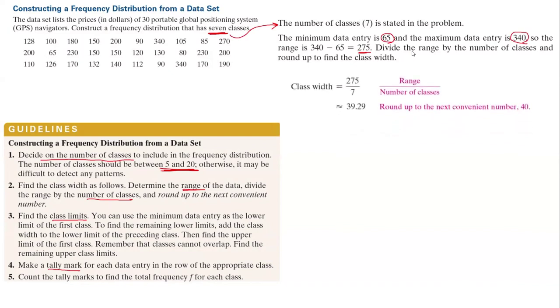Let us find the class width. It is the range divided by the number of classes, which is 39.29. Please pay attention here. To find the class width, you always round up. So even though it's 39.29, you're going to round it up to 40.